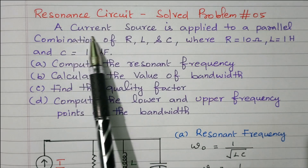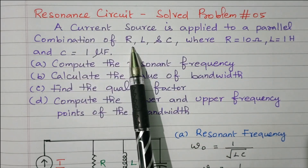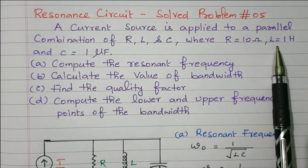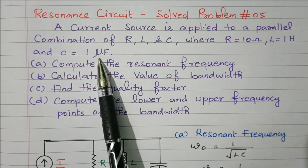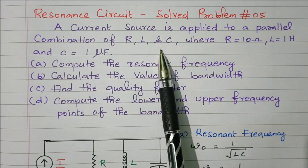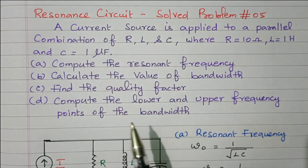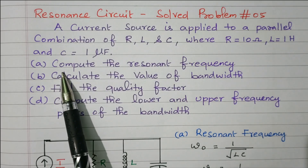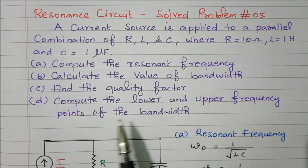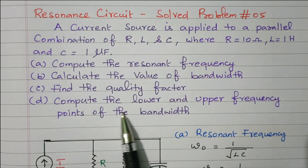Now we'll go to the problem. A current source is applied to the parallel combination of R, L, and C, where R equals 10 ohm, L equals 1 Henry, and C equals 1 micro Farad. We need to: first, compute the resonant frequency; second, calculate the bandwidth; third, find the quality factor; and fourth, compute the lower and upper frequency points of the bandwidth.